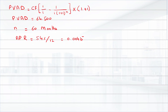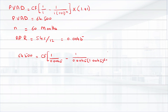By putting the values into the equation: 64,500 equals cash flow times 1 divided by 0.0045 minus 1 over 0.0045 into 1.0045 raised to power 60, multiplied by 1.0045. Solving this, the cash flow is $1,223.54.